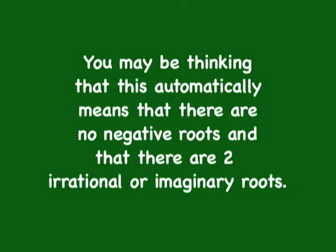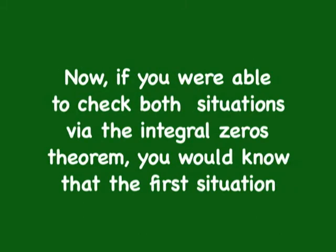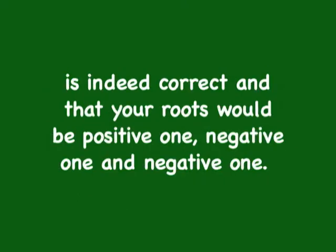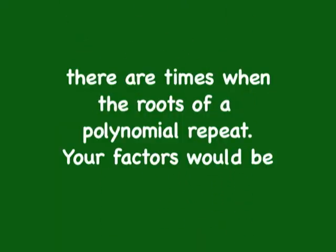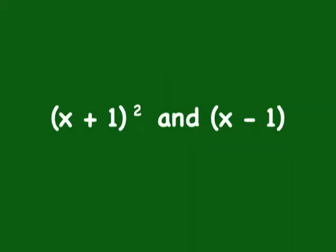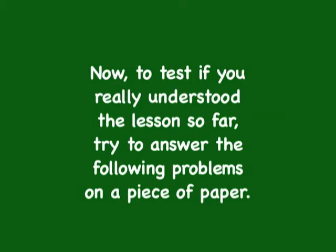The exponent of the leading term is three, so it has three roots. You may be thinking this automatically means there are no negative roots and that there are two irrational or imaginary roots. However, if you checked both situations via the integral zeros theorem, you would find the first situation is correct: the roots are positive 1, negative 1, and negative 1. Yes, there are times when the roots of a polynomial repeat. Your factors would be (x + 1)² and (x - 1).